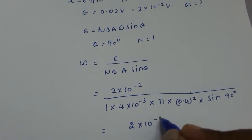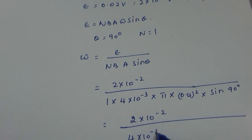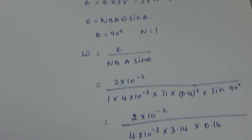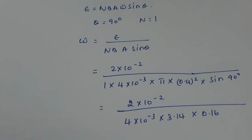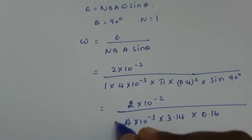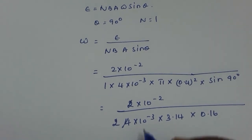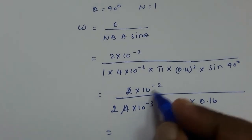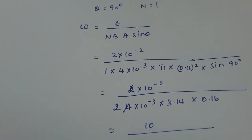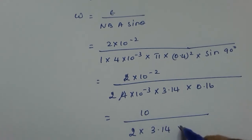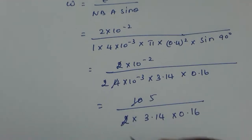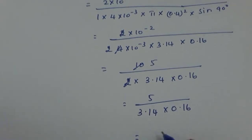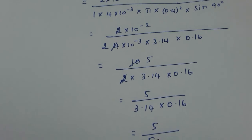So it is 2 into 10 raised to minus 2 divided by 4 into 10 raised to minus 3 into 3.14 into 0.16 into 1. If you take 10 raised to minus 3 to the numerator, it becomes 10 raised to minus 2 times 10 raised to plus 3. So it is 10 divided by 2 into 3.14 into 0.16. After cancelling, it is 5 by 3.14 into 0.16.